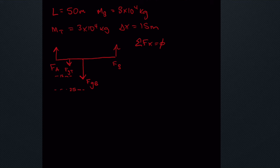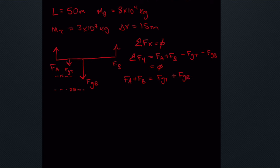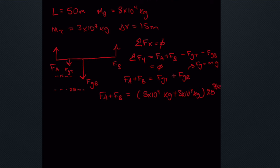In the x direction we have no horizontal forces, so the sum is zero. In the y direction, F_A and F_B push up while gravity from the truck and bridge push down. Since the bridge is not accelerating, these also sum to zero: F_A plus F_B equals F_g_truck plus F_g_bridge. Since gravitational force equals mass times g, we get F_A plus F_B equals the sum of the masses times 9.8 meters per second squared, which gives us 10.8 times 10 to the 5 newtons.